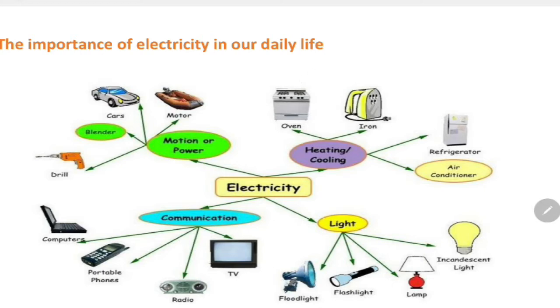For heating examples, it is oven or iron. For cooling, it's refrigerator and air conditioner. For communications, examples like computers, radio, portable phones, and TV. Electricity can be used to produce light like floodlight, flashlight, lamp, or light bulb.